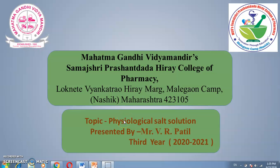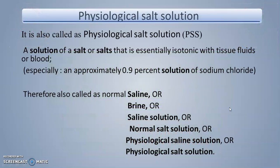Hello to one and all. I am Vinod Pati, working as assistant professor in M.G.V.S. Samashri Prasandadhaya College of Pharmacy, Department of Pharmacology. Today we will discuss physiological salt solution, shortly called PSS solution — a solution of salt or salts that is essentially isotonic with tissue fluid or blood, especially an approximately 0.9% solution of sodium chloride. PSS solution is also called saline, brine, saline solution, normal salt solution, or physiological saline solution.